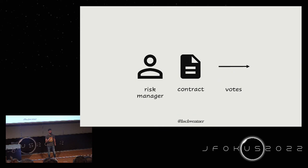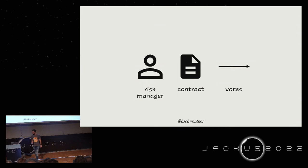Those are nouns — the icons 'risk manager' and 'contract' — and the activities are verbs. Verbs express the dynamics, they express what's happening. Risk manager and contract are things we can see or touch; activities like 'votes' we have to learn about by observation or through interviews.